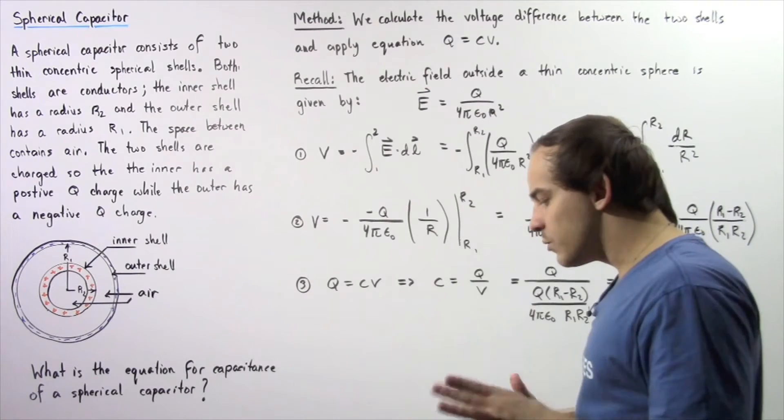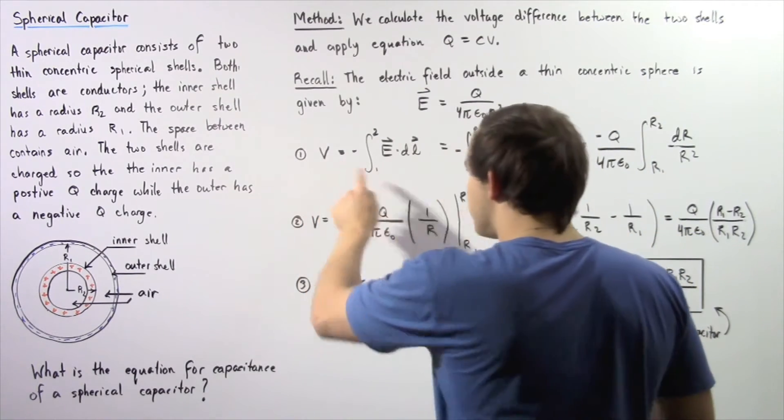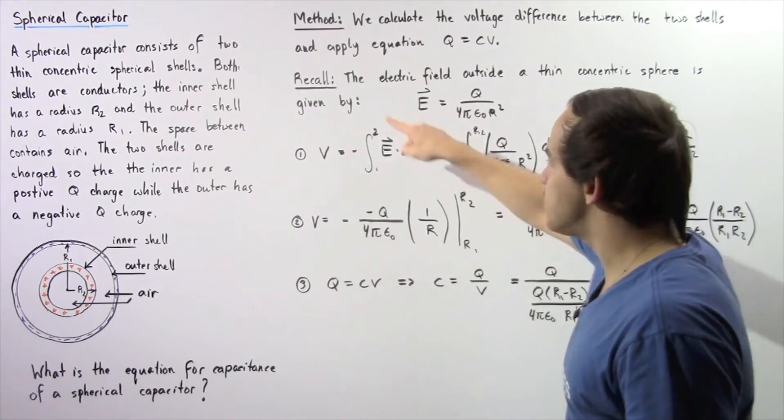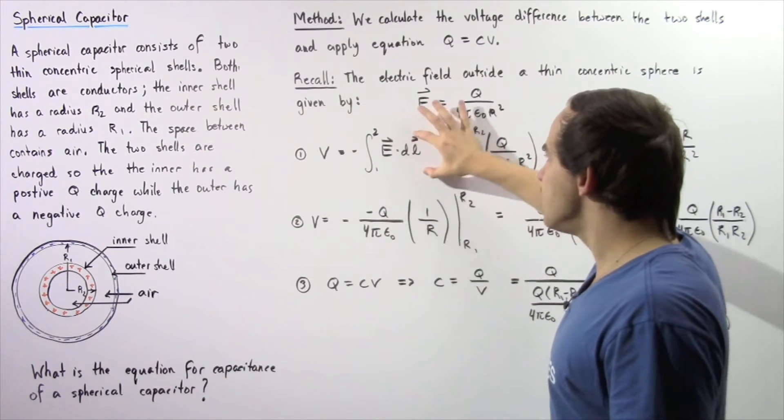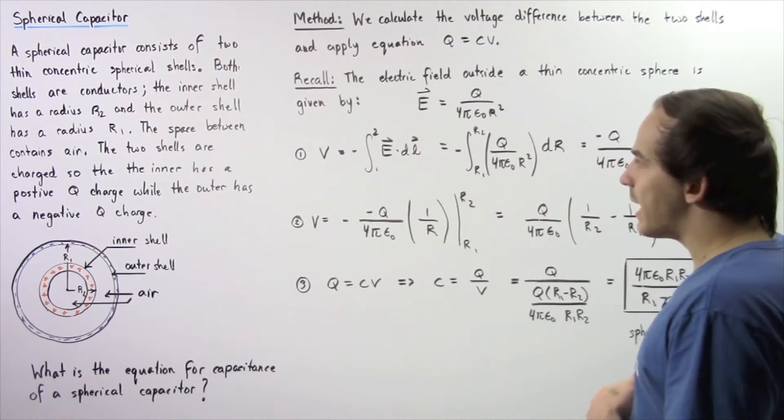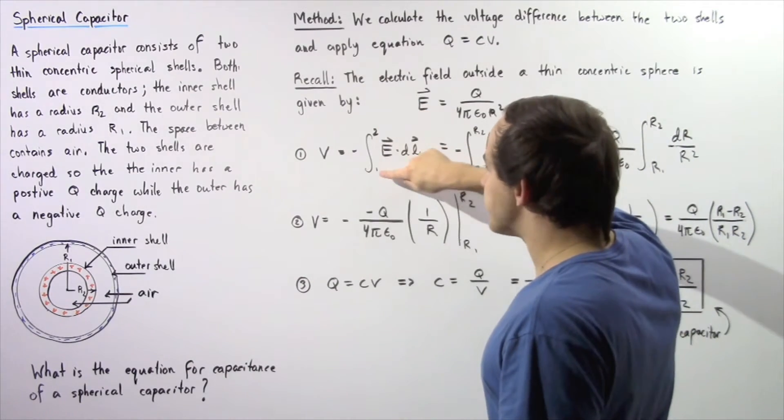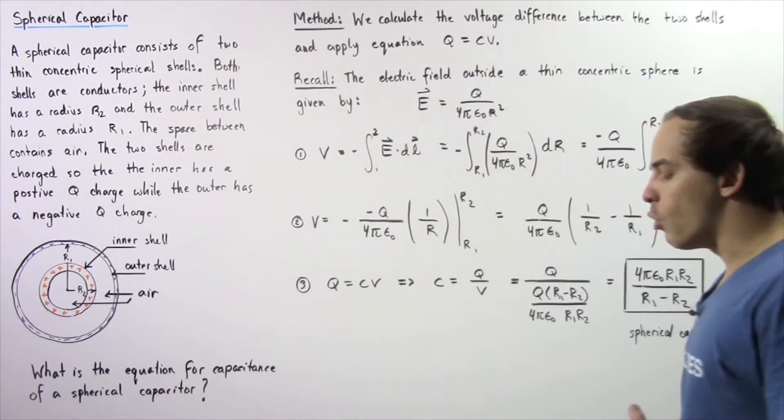Earlier, we showed that the voltage is equal to negative of the integral of the dot product of the electric field and the infinitely small distance given by dl between two points, point 1 and point 2.